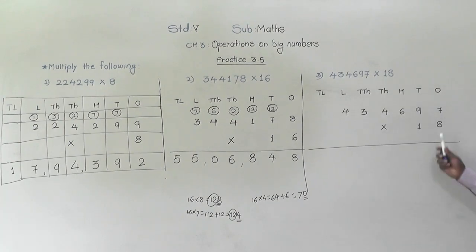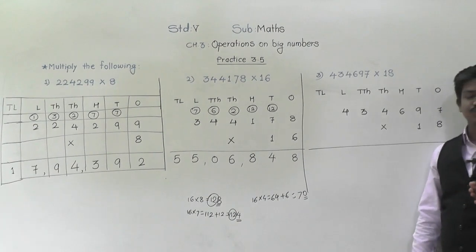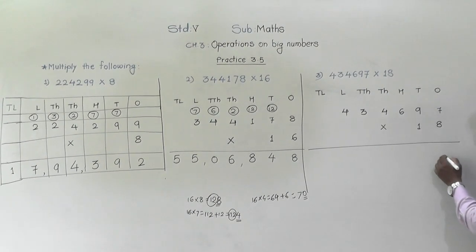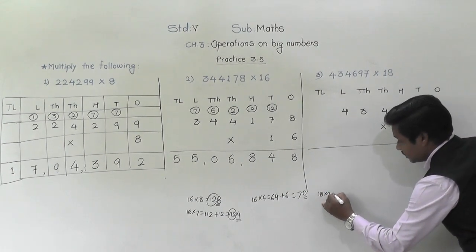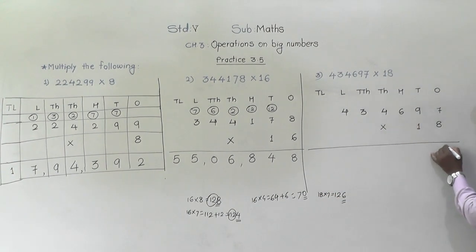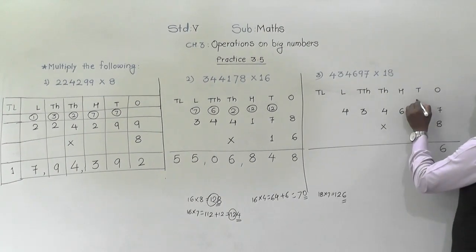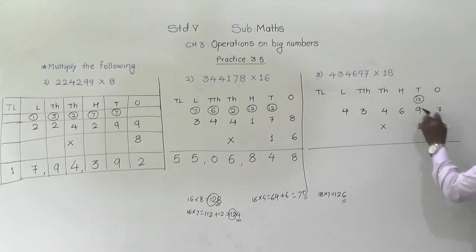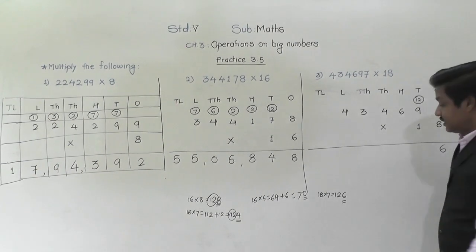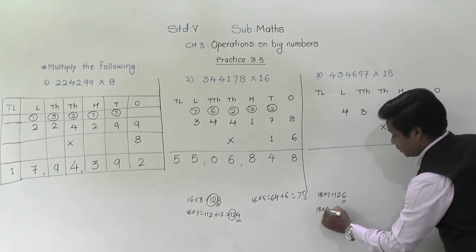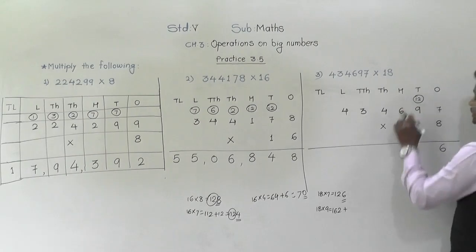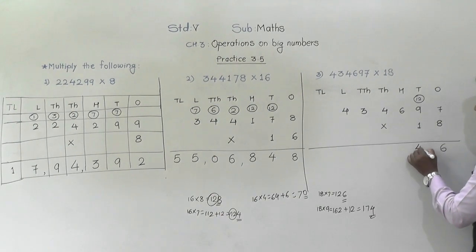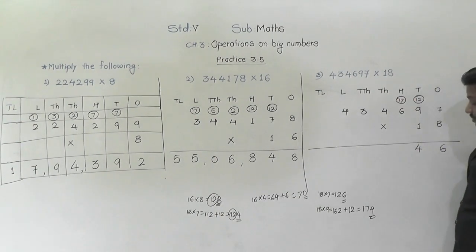First, we will multiply the ones place digit. 18 sevens are 126. So 6 will come down and 12 will be carried. Then 18 nines are 162. 162 plus 12 carried is 174. So 4 will come down and 17 will be carried.